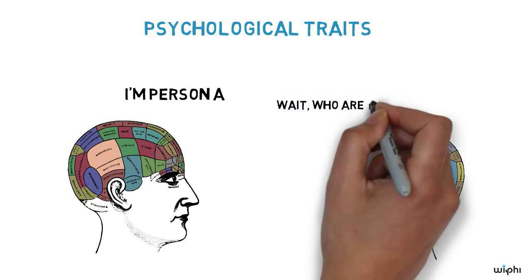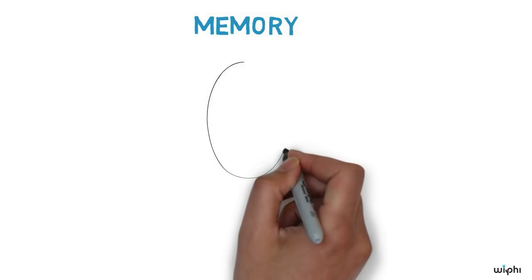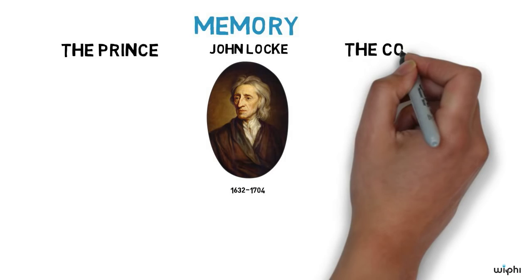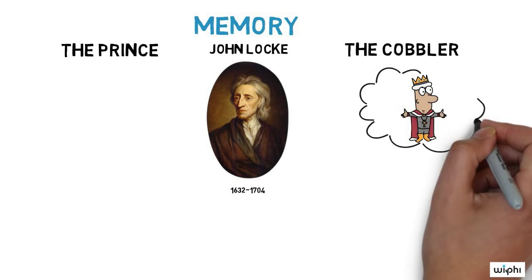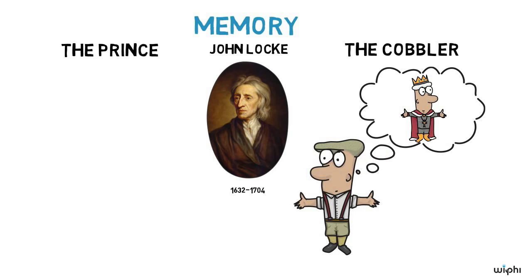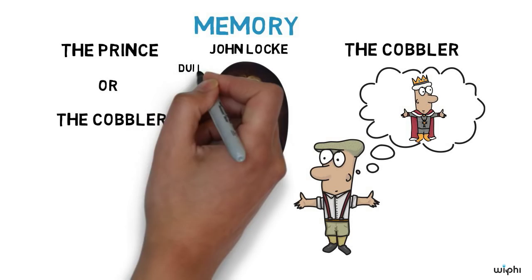Memory has traditionally been seen as playing an especially crucial role in personal identity. John Locke illustrates this idea with a thought experiment about a prince and a cobbler. Imagine the mind of a prince containing all the prince's past experiences were to enter into and replace the cobbler's memories and experiences. This new individual, is he the prince or the cobbler? Locke thinks the answer is really obvious. Of course this is the prince. It's just that now the prince is inhabiting the body of the cobbler.